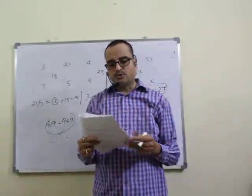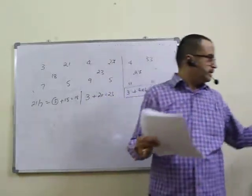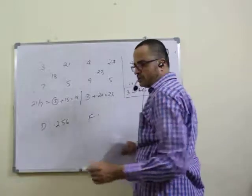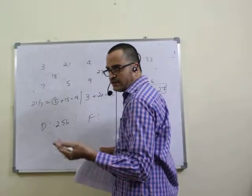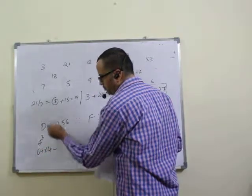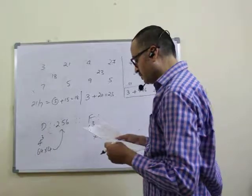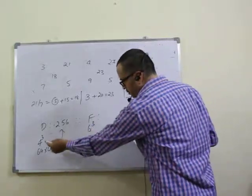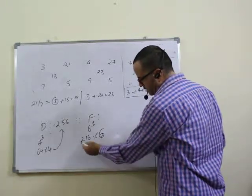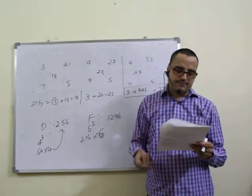Question eleven: D is to 256, F is to — what? D's alphabetical value is 4; 4 cubed is 64; 64 times 4 equals 256. Similarly F equals 6; 6 cubed is 216; 216 times 6 equals 1296. So answer is 1296 — eleventh question, second option.